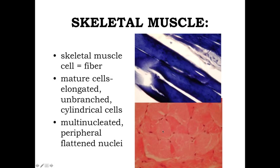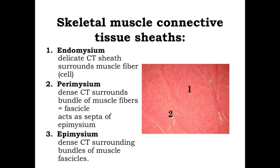In a cross-section of skeletal muscle with the hematoxylin and eosin stain, we can see individual cells as roughly circular areas. The nuclei are going to be peripherally located, flattened up underneath the sarcolemma. The majority of the cell is coarse-staining cytoplasm representing the myofilaments — the thick and thin filaments — giving it a coarse pink staining because of all the protein present.